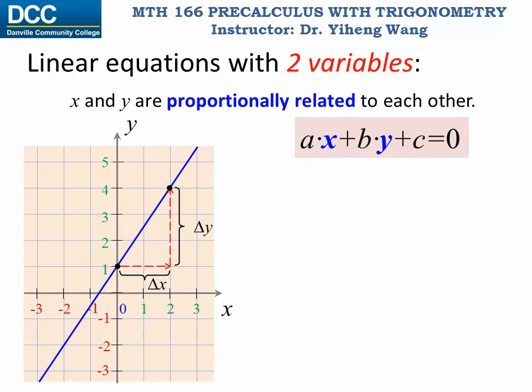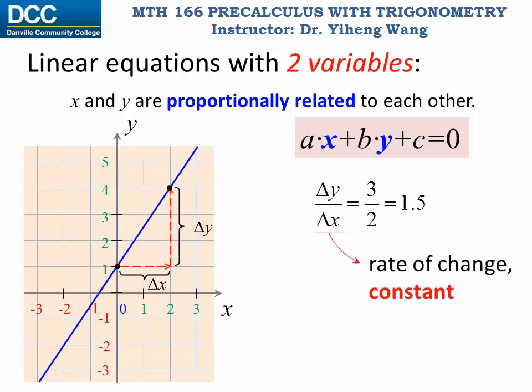In fact, no matter how we choose two different points on this line, it is always true that the ratio between delta y and delta x is a constant, in this case 3 over 2, or 1.5. In everyday life, we call it a constant rate of change. Here we give it a name, slope represented by letter m. Now we know that y is proportional to x by a coefficient of 1.5, so we can write this. But it is not complete.